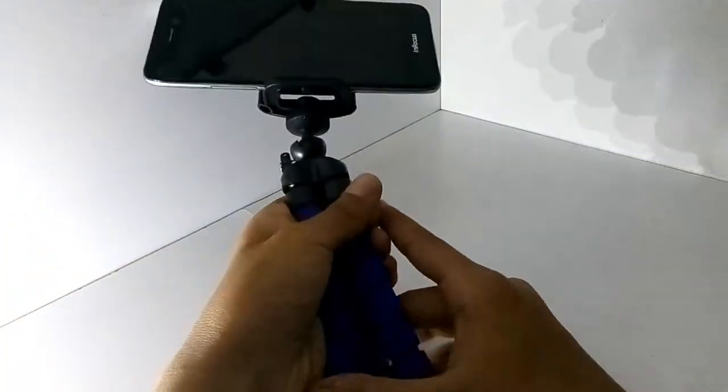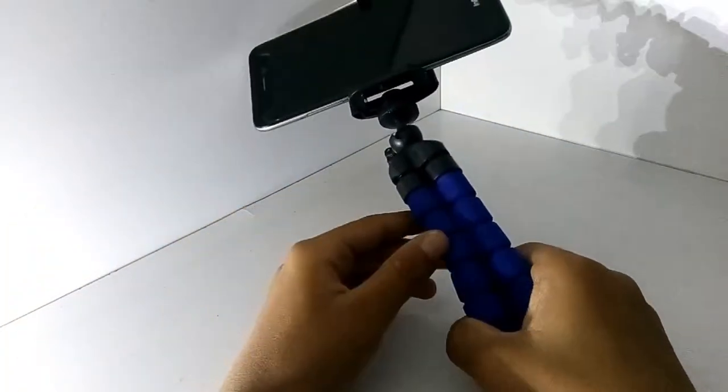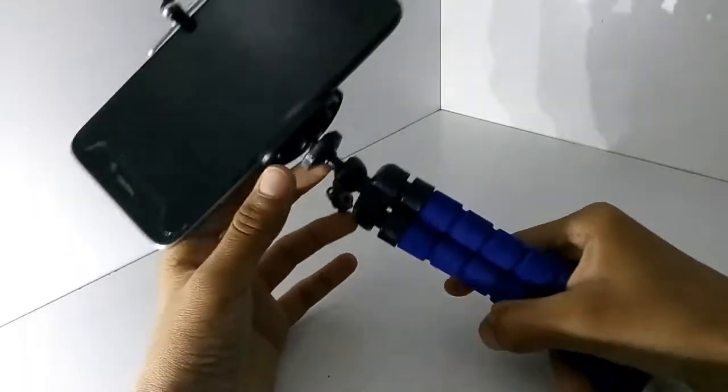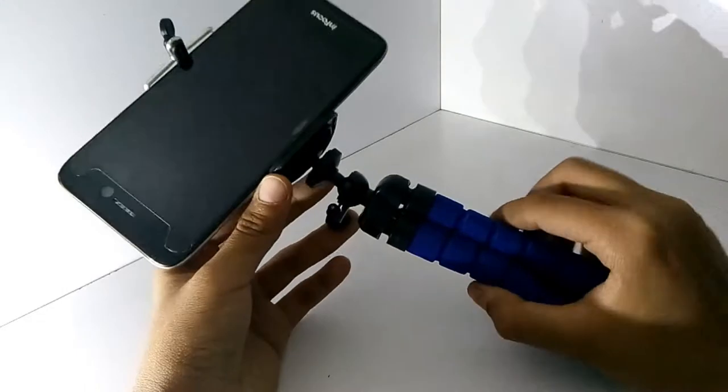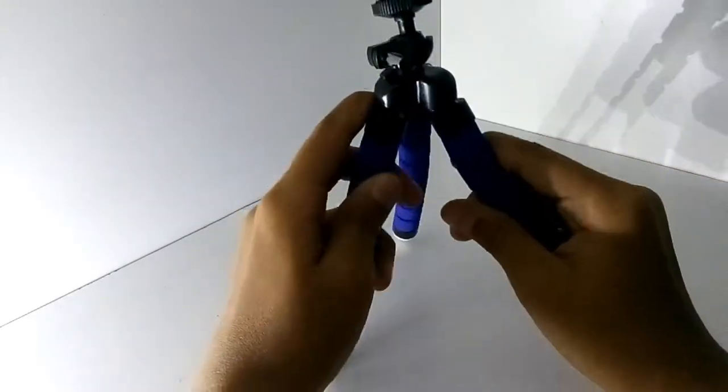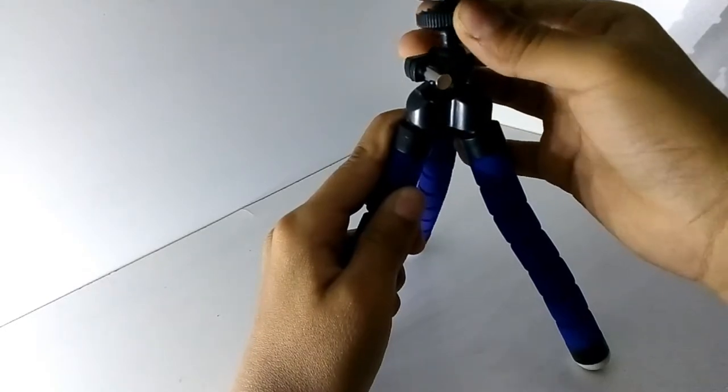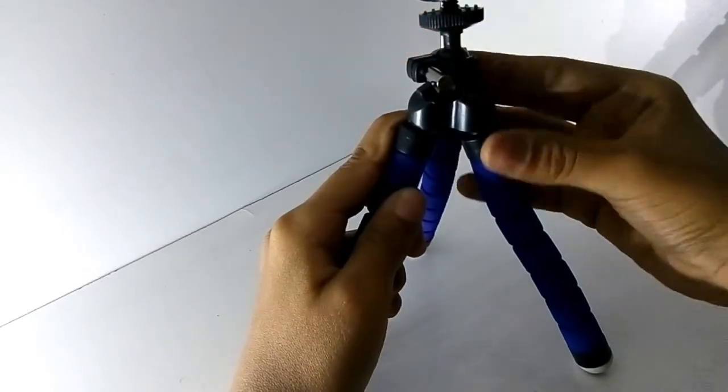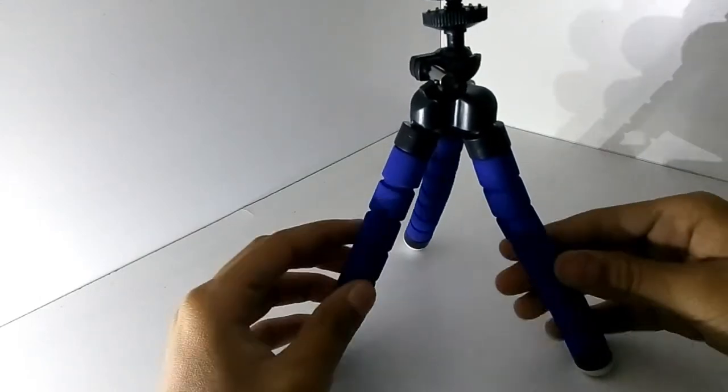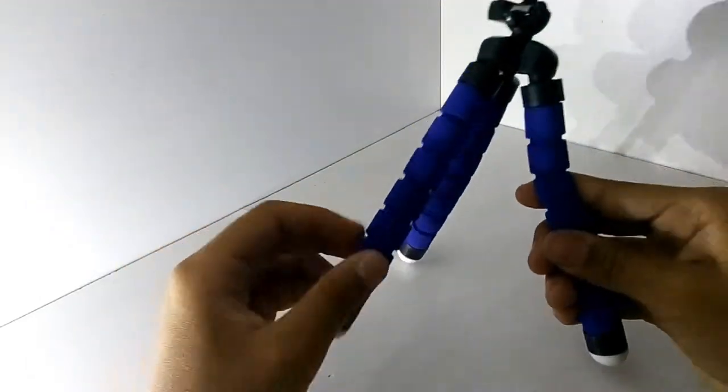As you can see, this is useful in vlogging also. You can hold like this and go on for vlogging. And this plastic is very nice, not cheap plastic. This is velvet and the grip is of rubber.